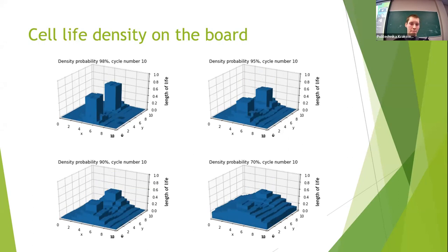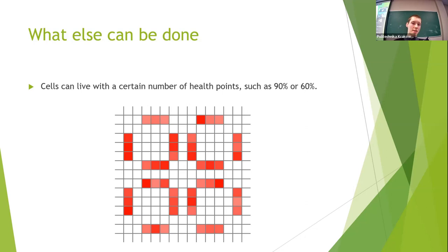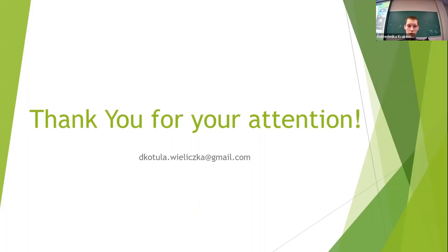At the end, I will mention what else can be added to the Conway Game of Life to make it more like the world around us. Cells do not have to be either alive or dead — they can live with a certain amount of life. In that case we have to change the rules again, because such a cell will almost never have exactly two or three neighbors. We need to set a certain range — for example, from two and three quarters of a neighbor to three and a quarter of a neighbor. This gives us the possibility of further measurements and in no way limits us from further modifying the rules and the program. Thank you.